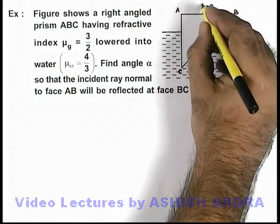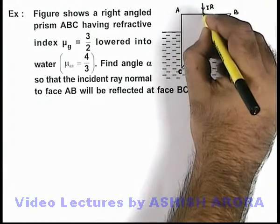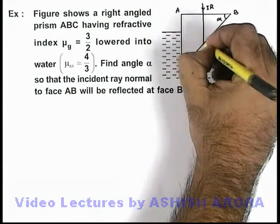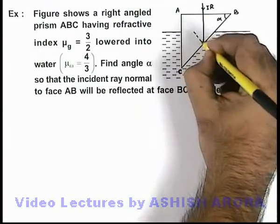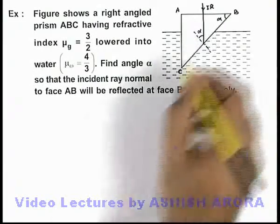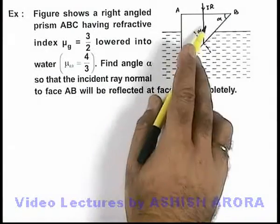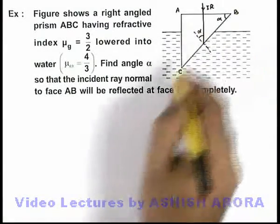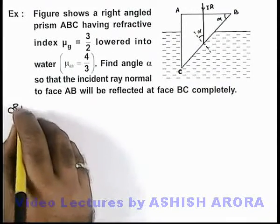If the light ray is incident on the base AB normally, it will be incident on face BC at an incidence angle alpha, because if this angle is alpha, this will also be alpha. We want the light ray to reflect from face BC.